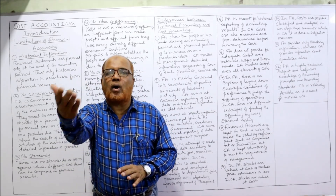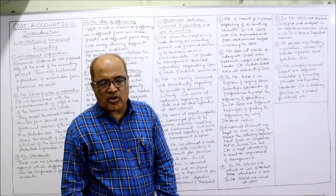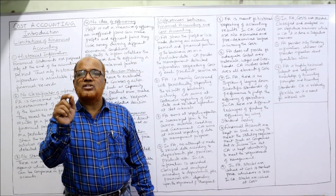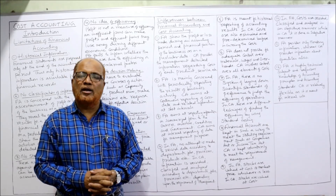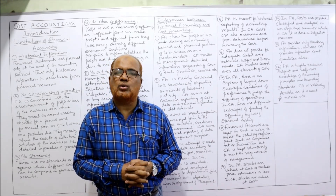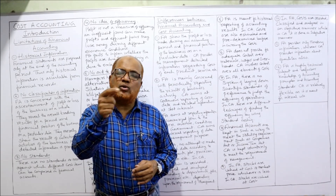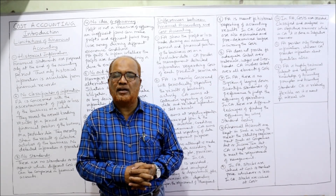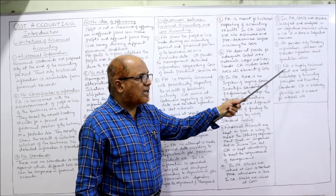Financial accounting provides only monetary information — only items measurable in terms of money are recorded. Whereas in cost accounting, even units are recorded — not only monetary but also non-monetary values. For example, units of production are also taken into consideration in cost accounting.